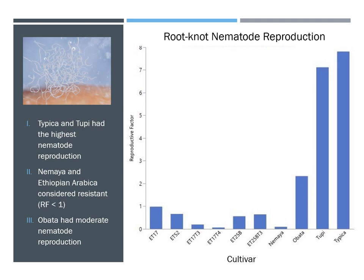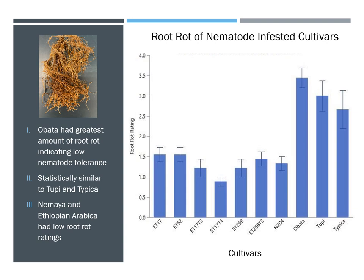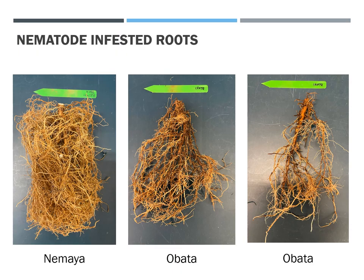The results of the study showed susceptible Typica and Tupi to have the highest nematode reproductive factors. As expected, Nemaya and Ethiopian Arabica were resistant with very little reproduction and reproductive factors under one. The Obata cultivar had moderate nematode reproduction and was considered susceptible to Kona coffee root knot nematode. Root rot of the infested plants was evaluated on a scale of 0 to 5, with 5 being the highest level of damage. Obata had the greatest amount of root rot, indicating a very low tolerance of nematode infestation, and was statistically similar to Tupi and Typica, while Nemaya and Ethiopian Arabica had fairly low root rot ratings. These photos show the infested roots after being removed from the pots and cleaned. Nemaya had a healthy, robust root system even in the presence of nematodes, while Obata showed varying levels of damage but an overall reduction in feeder roots and higher levels of rot.